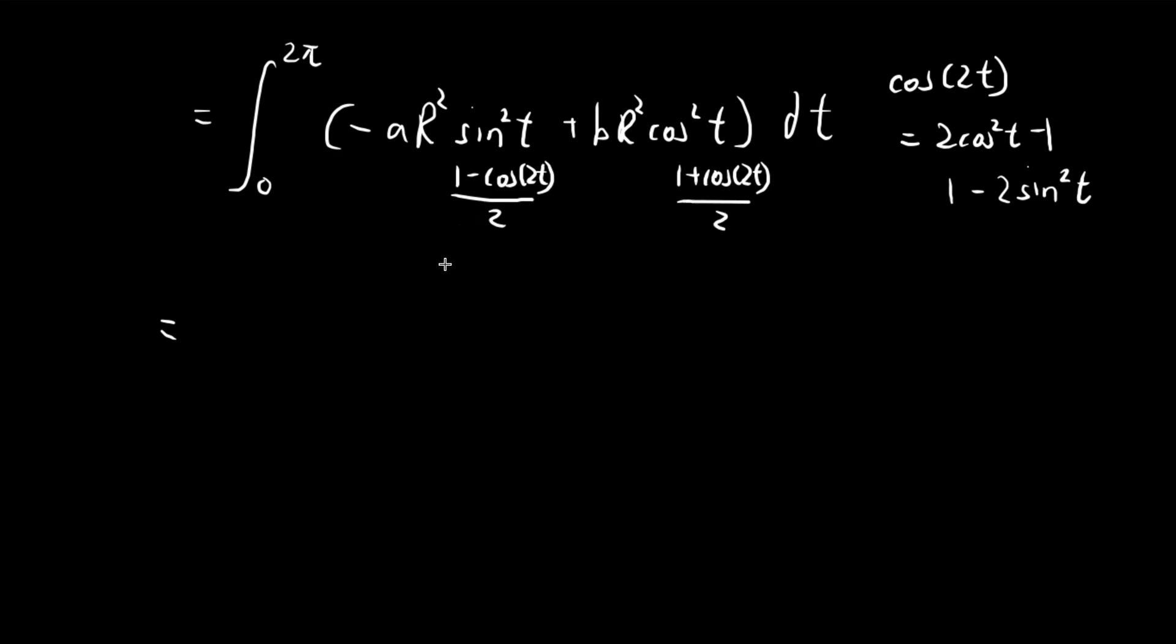If you integrate this, you're going to get t/2 - sin 2t/4, evaluating from 0 to 2π. Similarly, for the cosine squared term, after you integrate this, you're going to get t/2 + sin 2t/4 from 0 to 2π.